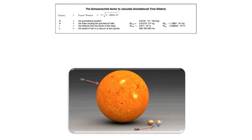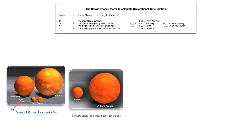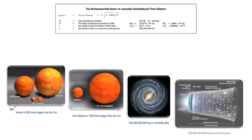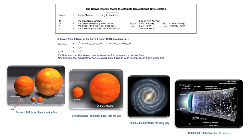The Earth is really small compared to the size of the Sun, but there are other suns that are much bigger. Antares is almost 900 times bigger than the Sun, and the biggest star we know, Canis Majoris, is 1,500 times bigger than the Sun. There are about 100 billion stars in our own Milky Way, and astronomers estimate there are 100 billion galaxies each with 100 billion stars in the whole universe. So let's see the gravitational time dilation if the Sun were 100,000 times heavier: multiplying the mass of the Sun by 100,000, we see a time difference of 0.32 — so time would run 32% slower on the surface of the Sun compared to a clock on Earth. During every 4 days on Earth, only 3 days would pass on the Sun.